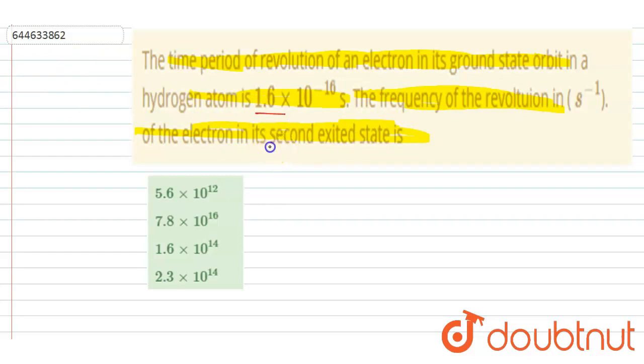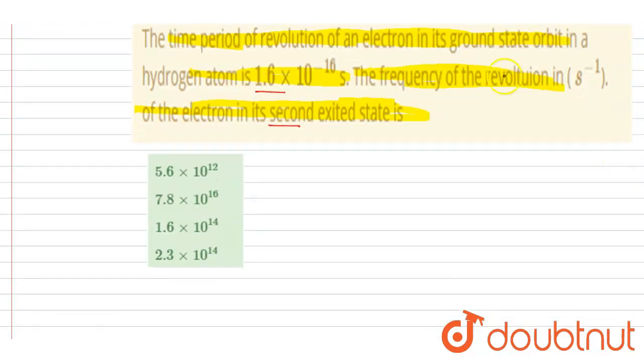If I talk about the second excited state, in second excited state the n will be equals to 3. In first it is 2, in second it is 3, right?